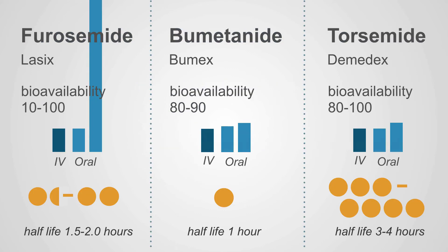There are three loop diuretics, each with different characteristics. The most familiar is furosemide, trade name Lasix, but there are two others: bumetanide and torsemide.